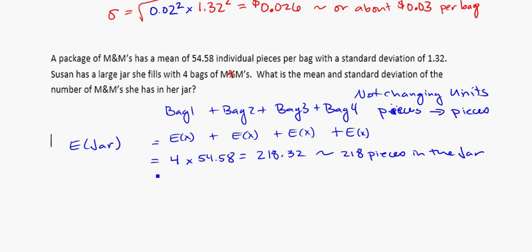And for our variance, remember this is a situation where we need to not use the formula so we don't use the a squared. The variance in the jar is going to be equal to 4 times the variance of one bag, so that's 4 times the variance of one bag. Remember that's still just the standard deviation squared, so 4 times 1.32 squared.